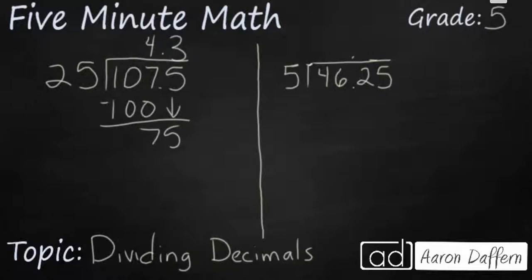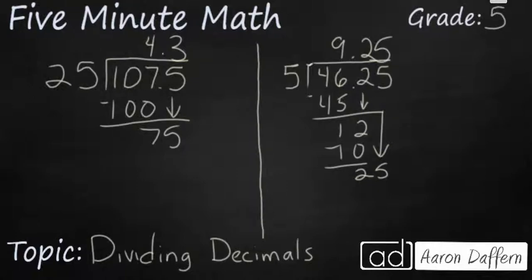On the second problem, 5 is going to go into 4 zero times but going to go into 46 nine times. And we've already moved our decimal up onto the division bar so we can ignore it. We can bring down the 2. 5 goes into 12 twice. That's 10. And then 5 goes into 25 five times. So, the answer is 9.25.